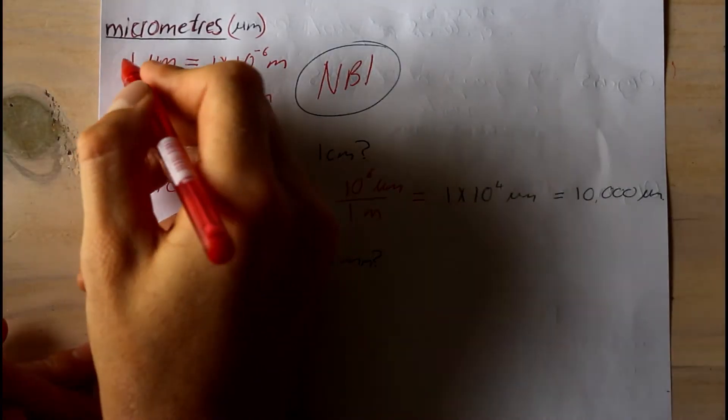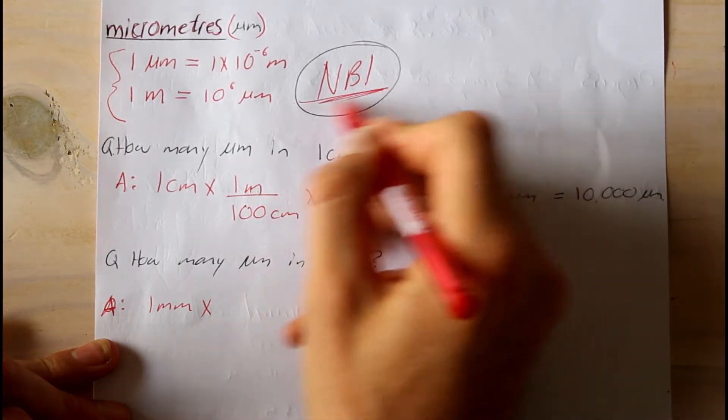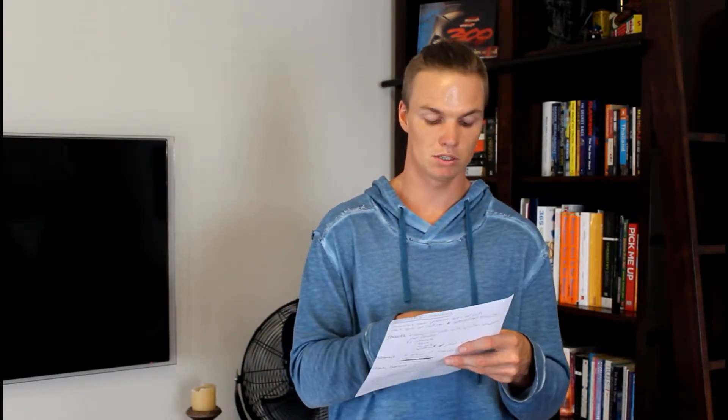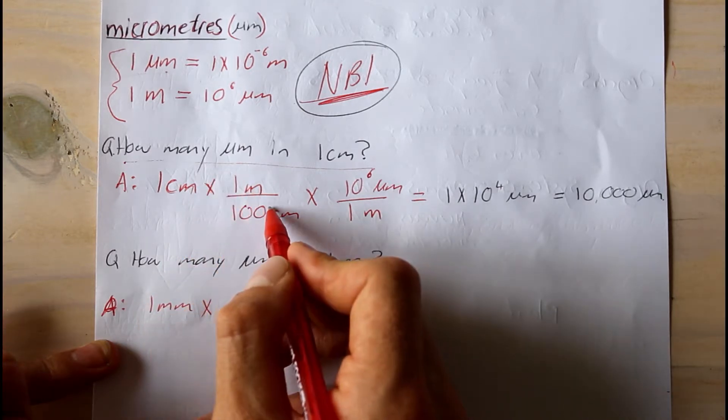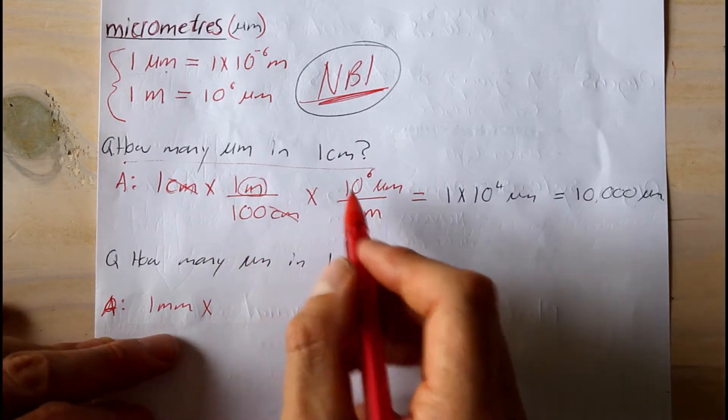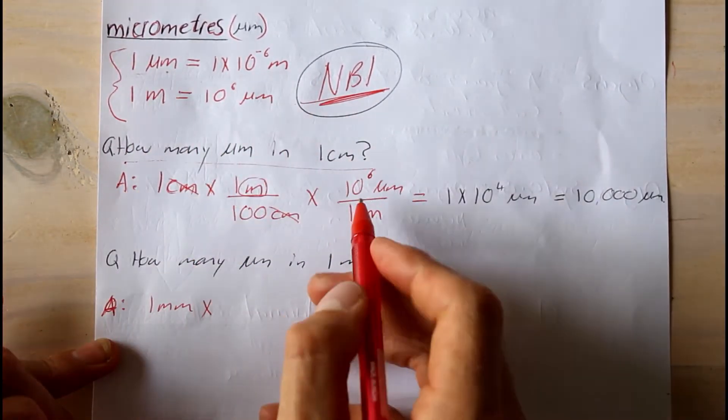When we talk about cells, it can be important to be able to measure cells to compare. We can't use meters, centimeters, or even millimeters — those are way too big. Cells are minute. We have to use a measurement unit called micrometers. One micrometer is 10 to the negative 6 meters. Conversions are very important — you have to know them. For example, a question asks how many micrometers are in one centimeter. We can convert centimeters to meters, then convert meters to micrometers using simple algebra.